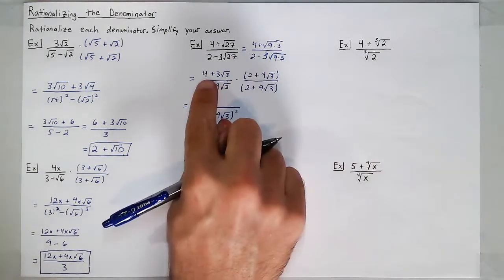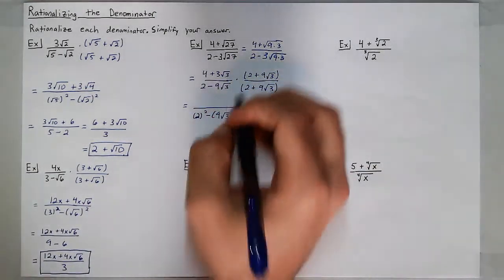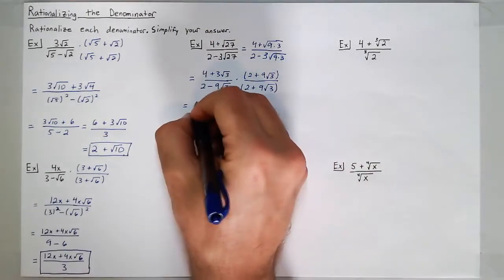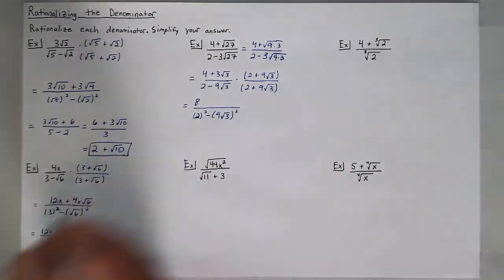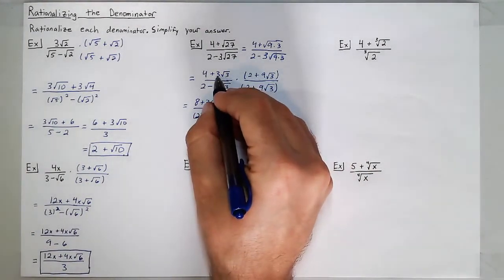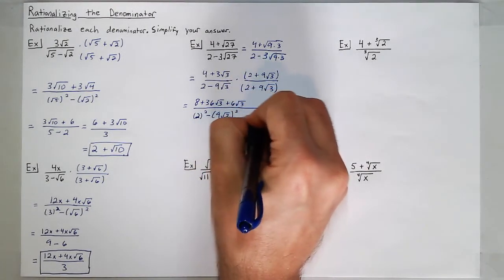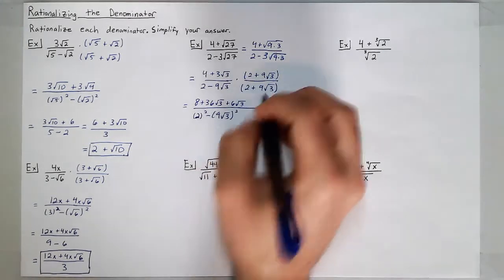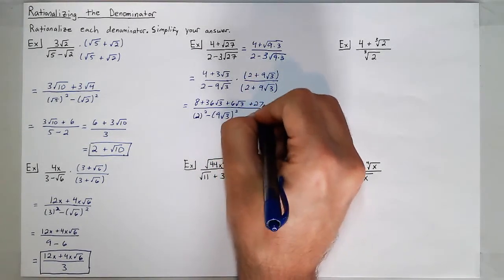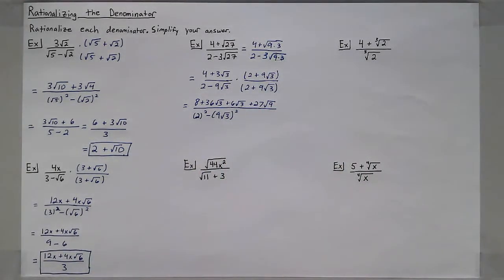My numerator isn't a simple distribution — it's going to be the FOIL method, giving four terms to combine later. 4 times 2 is 8; 4 times 9 square roots of 3 is 36 square roots of 3; 3 square roots of 3 times 2 is 6 square roots of 3; and 3 square roots of 3 times 9 square roots of 3 is 27 times the square root of 9, which comes out to 81.